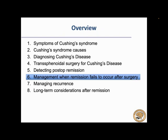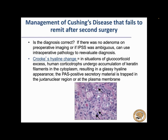Quickly covering a few remaining topics: when remission fails to occur after multiple surgeries, one helpful tool is Crooke's hyaline change — if a gland specimen was obtained during the unsuccessful surgery, our pathologist looks for this histologic change in corticotrophs exposed to glucocorticoid excess. If there was no adenoma, ambiguous IPSS, and no Crooke's change, the biochemical testing may have been a false positive. Failure to achieve remission can also be managed medically — ketoconazole is a time-honored option that blocks multiple enzymes in cortisol production, normalizing cortisol in 45% of patients after three months, though repeat surgery at 60% success is still preferable. It also carries a 12% risk of liver toxicity.